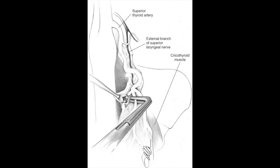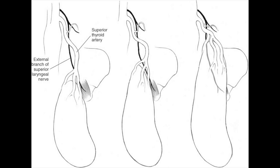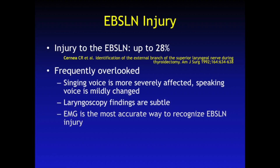Meticulous visualization and dissection technique is required in managing superior pole vessels and preserving the external branch. The external branch parallels the laryngeal head of the sternothyroid muscle as it inserts in the larynx. The sternothyroid muscle can, in its superior extent, be sectioned to provide added exposure to the superior pole. As goiterous formation progressively affects the superior pole region, the goiter is drawn superiorly, bringing it into closer and more intimate relationship with the external branch of the superior laryngeal nerve. External branch injury is difficult to diagnose but may occur frequently during thyroidectomy.